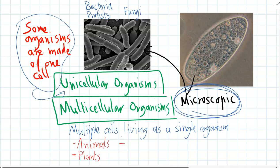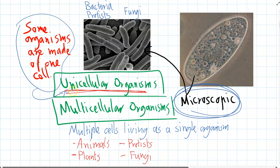Some of the fungi and some of the protists are multicellular as well. The unicellular organisms are the oldest — they evolved first. The very first organisms were unicellular, and then the ability to be multicellular evolved later on in the history of life.